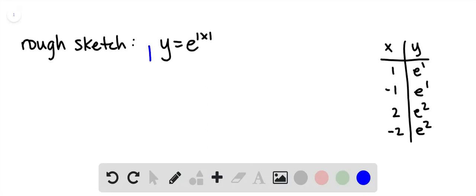We're going to make a rough sketch of y equals e to the absolute value of x. Let's start by looking at y equals e to the x, our basic exponential growth function that would look like this.